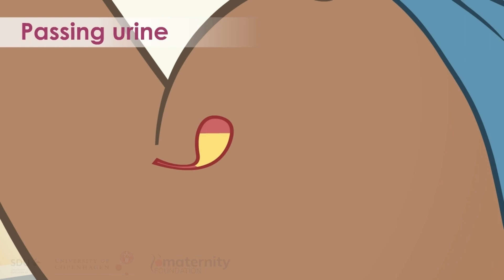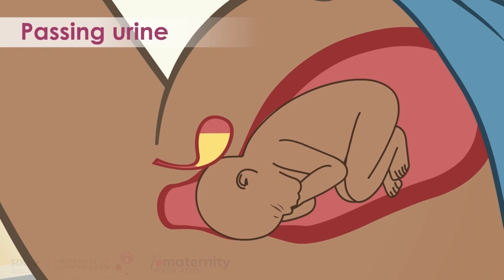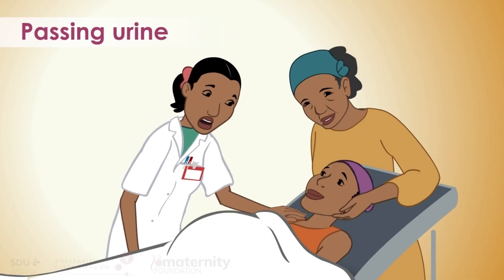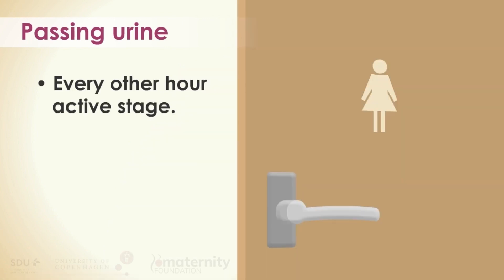Passing urine: Since a full bladder affects uterine contractions and can complicate the descent of the fetal head through the pelvis, it's important to remind the woman to pass urine every other hour throughout the active phase, first stage of delivery.